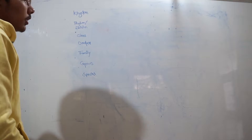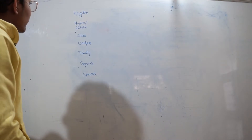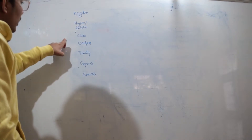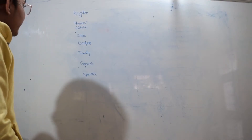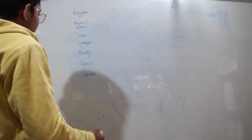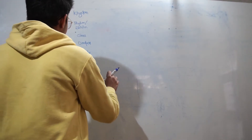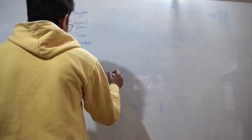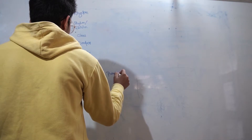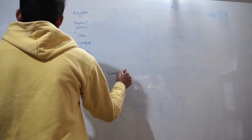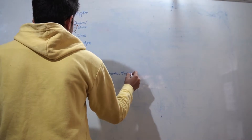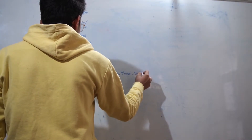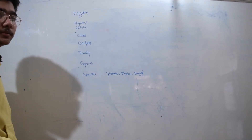You might remember the code word I taught you for those 7 categories. I am writing here 3 different species: potato, makoi, and brinjal. These are 3 different species.